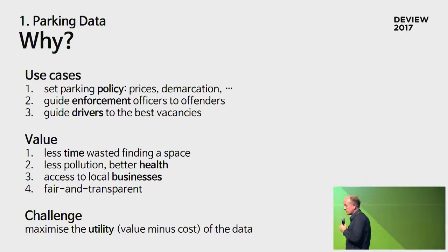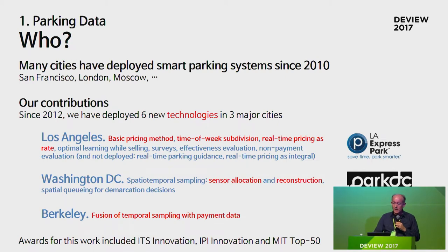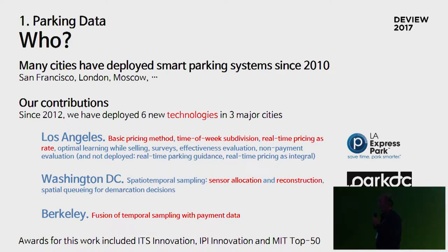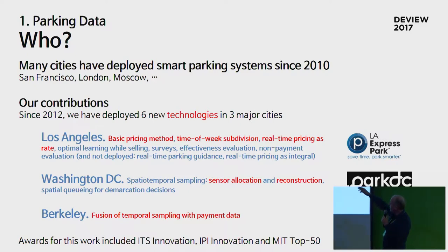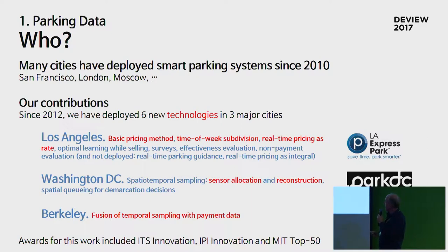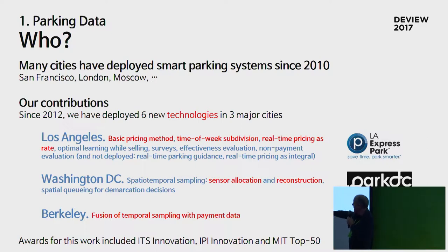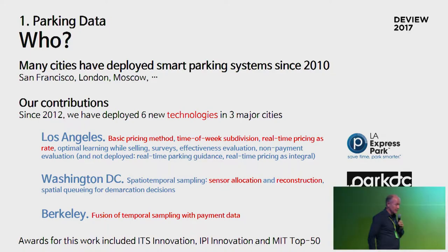The challenge is to maximise the utility of the data - those values minus the cost of acquiring the data. Using in-street sensors can be rather expensive. Many cities have deployed such smart parking systems since 2010 - for instance, San Francisco, London, Moscow. We worked with three main cities where we deployed a number of different new technologies, and also deployed many other machine learning technologies in evaluating their effectiveness. We developed systems for forecasting and policies for real-time parking guidance. But today I'll only talk about pricing and sampling.